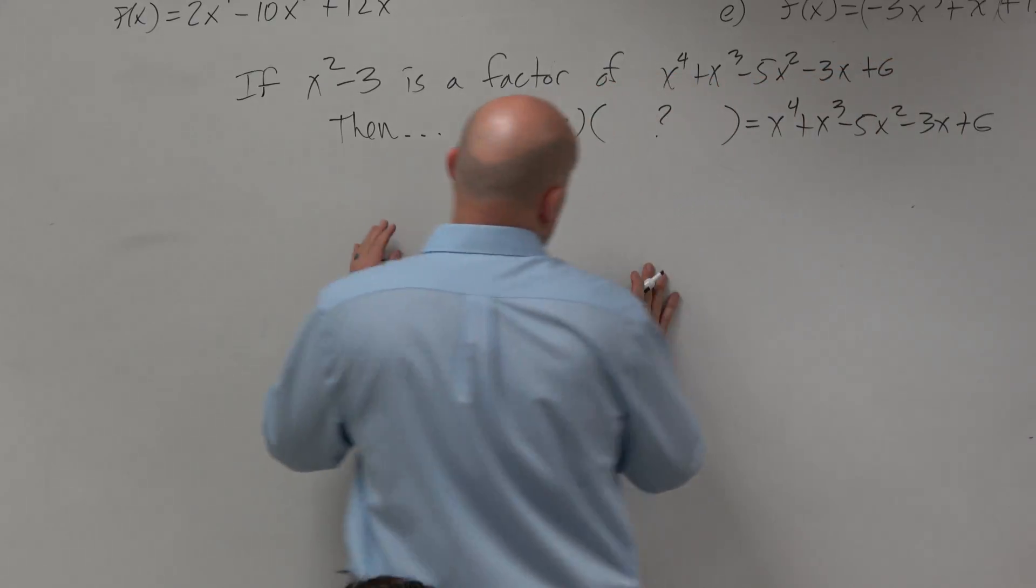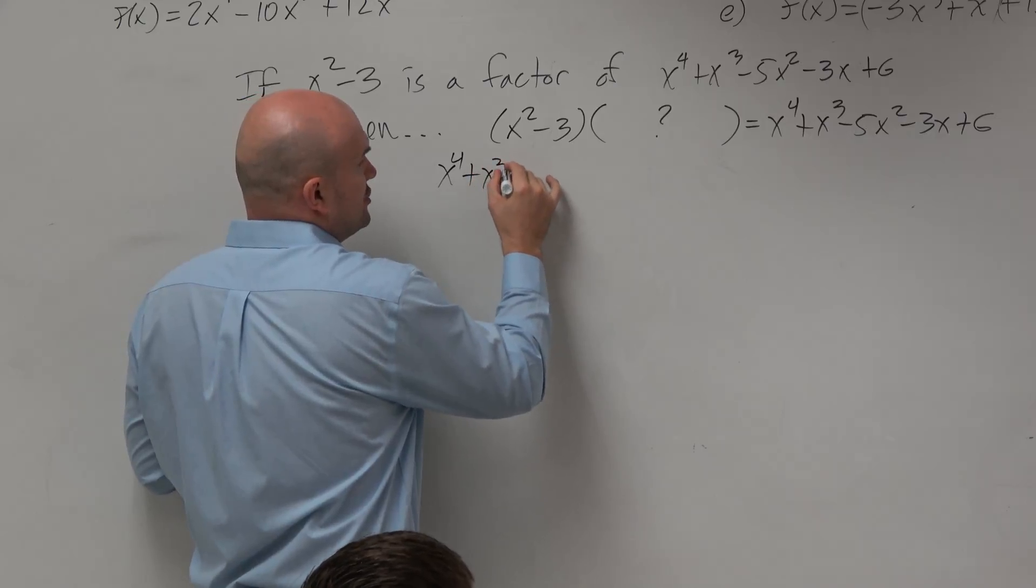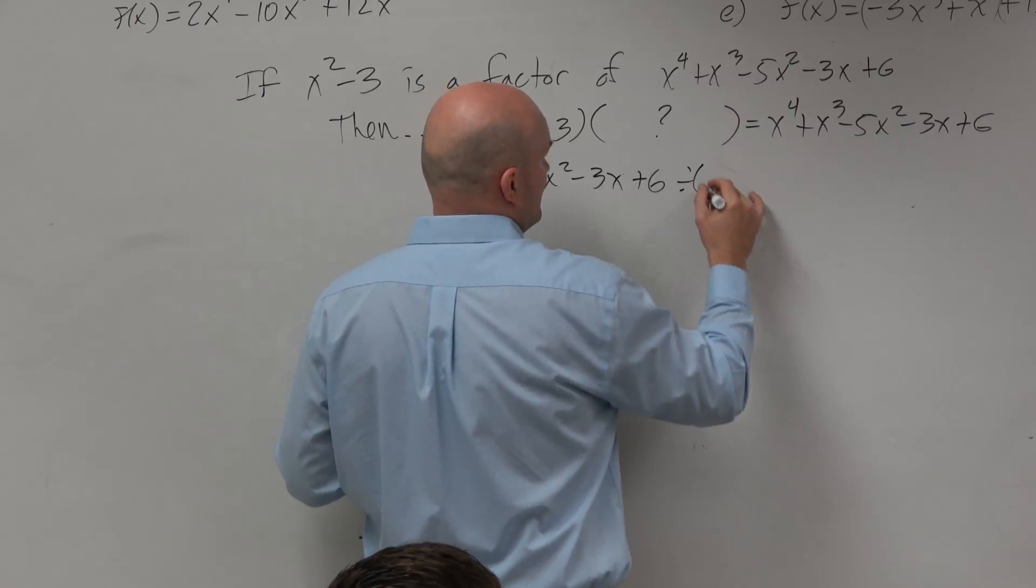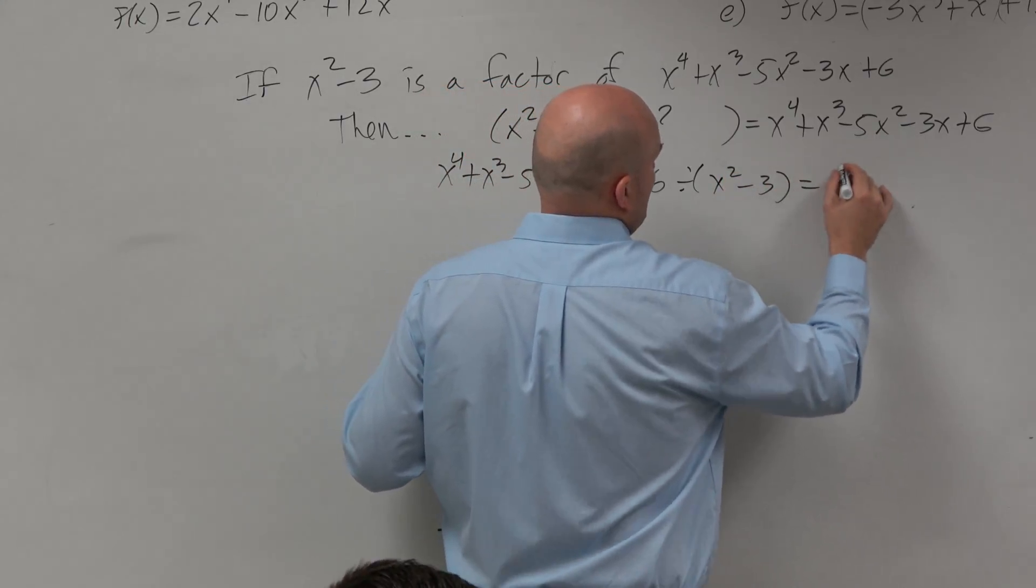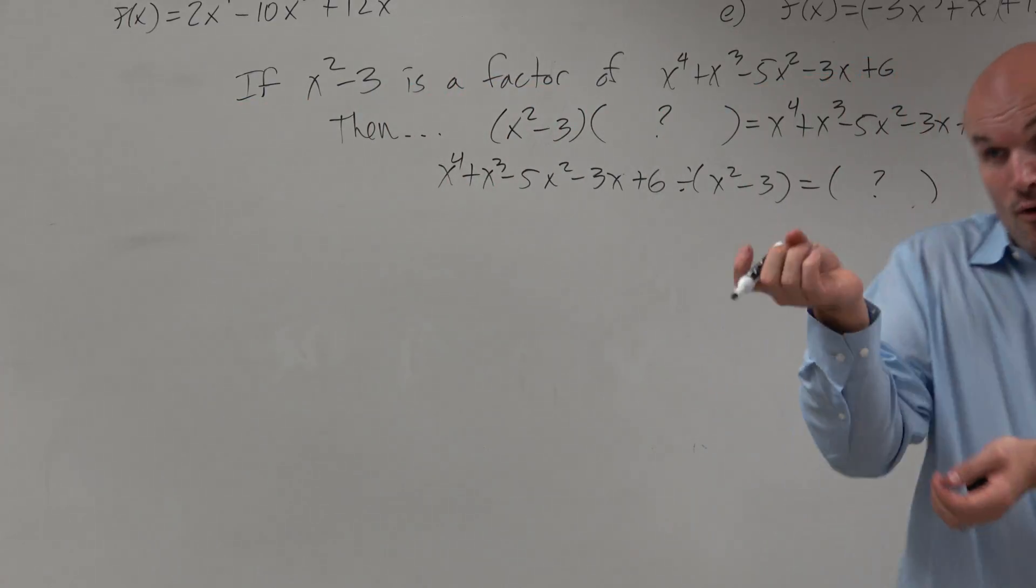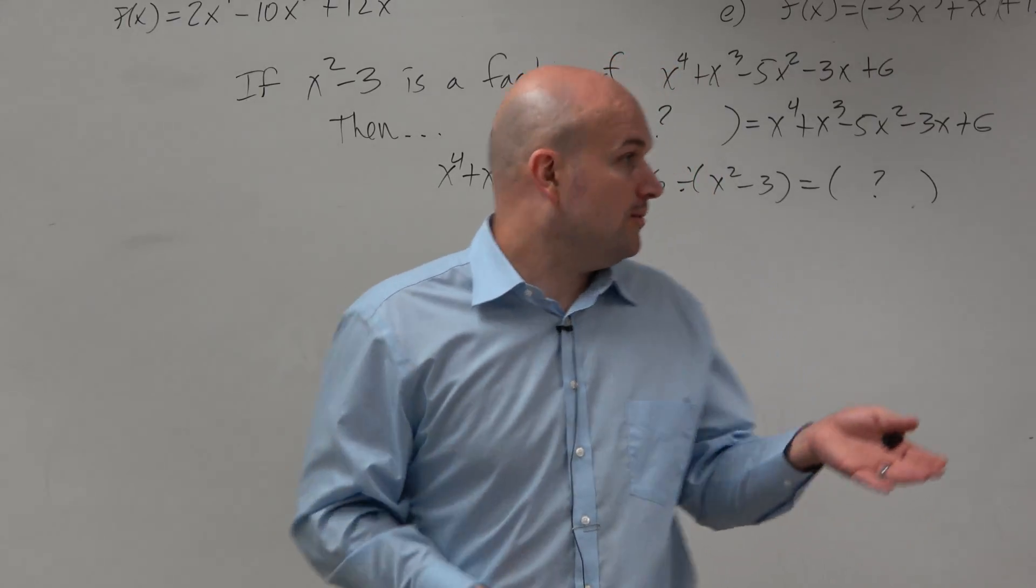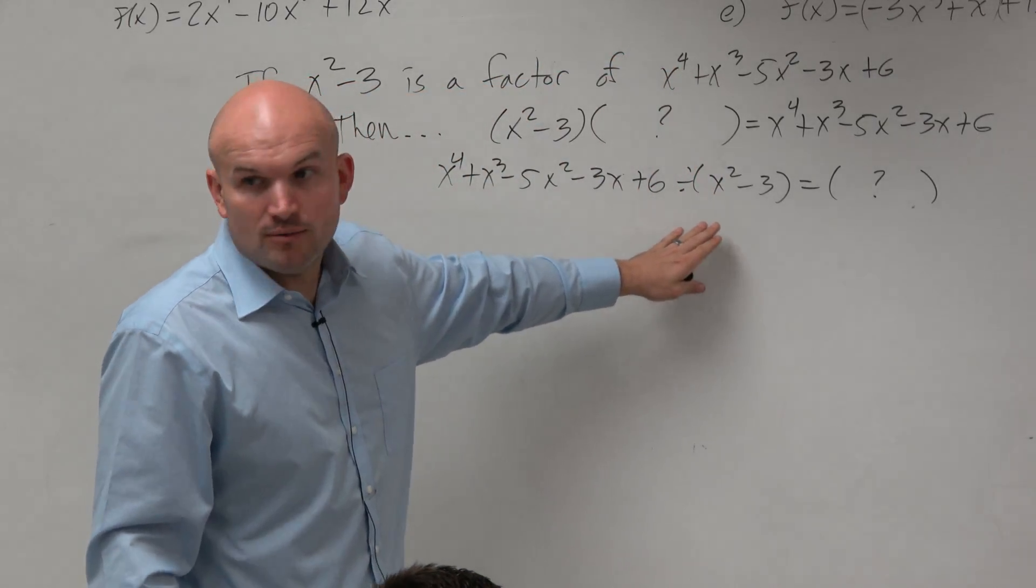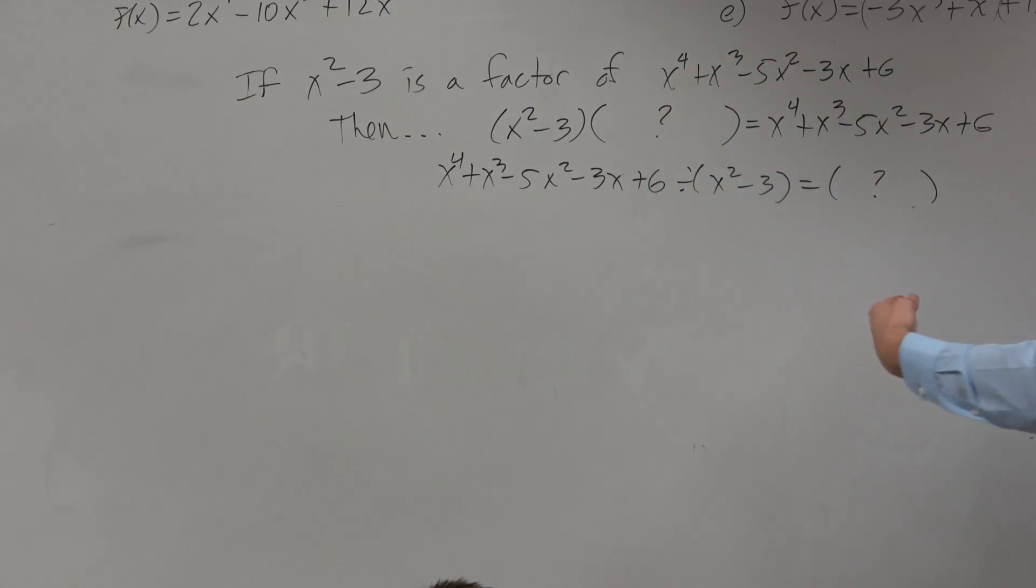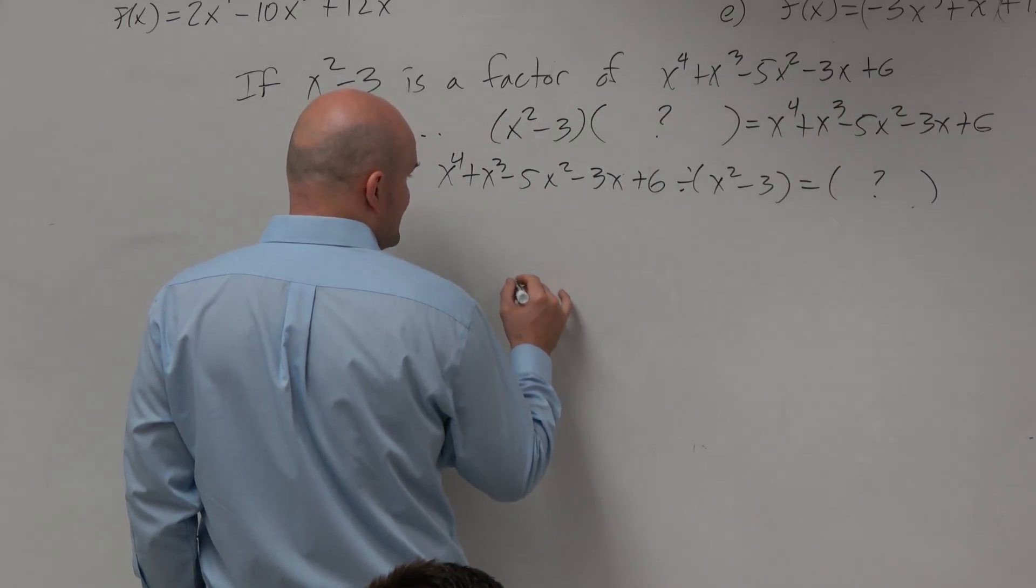We could also look at it. We could also write x to the fourth plus x cubed minus 5x squared minus 3x plus 6 divided by, if something is a factor, that means you can divide by it. If 4 is a factor of 12, you can take 12 divided by 4. So here we have division. We just talked about how can we use division with polynomials, and the first one we're going to want to step up is long division.